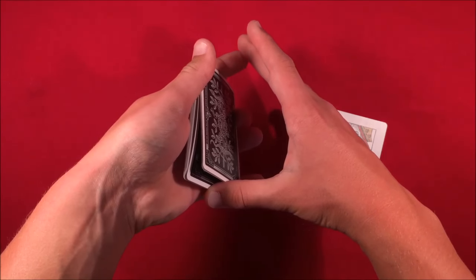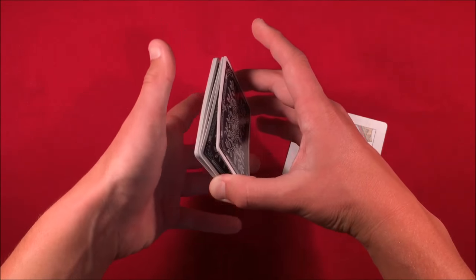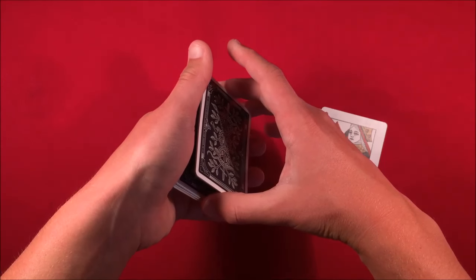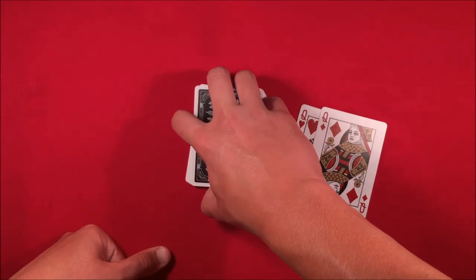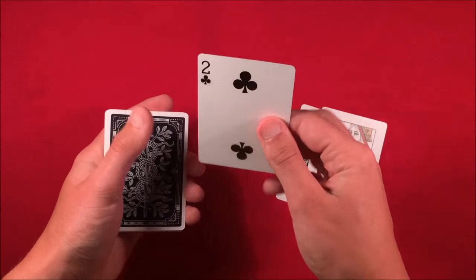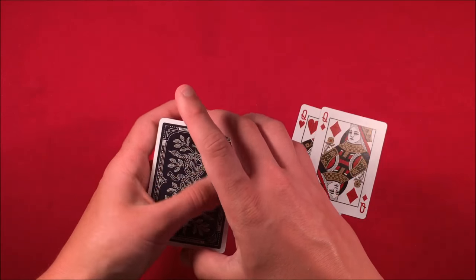As you push down, create a little break, pick up the top packet with your right hand, peel it off, and cut it to the table quickly. It looks like the card is getting mixed up, but in reality it's now on top of the deck.